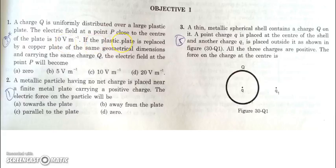So what will be the field if the same charge is distributed over a conducting copper plate? As the charge remains same, the field will remain same because charge is the only factor that decides the field, not the material. So the field will remain same.